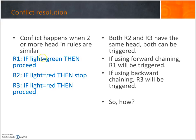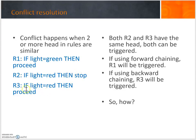Conflict happens when two or more head parts of rules are similar. The 'head' refers to the 'if' part. For example: Rule 1 — if light is green, then proceed. Rule 2 — if light is red, then stop. Rule 3 — if light is red, then proceed. Rule 3 conflicts with Rule 2 because both have 'light is red' in the head, but the actions — stop versus proceed — are different.